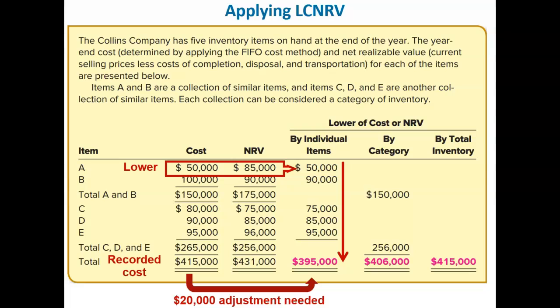After determining the lower of cost or net realizable value for each individual item, the total amount to report for inventory is $395,000.